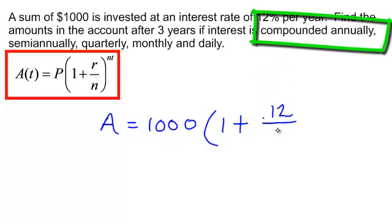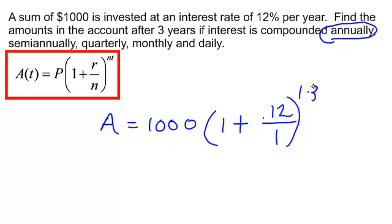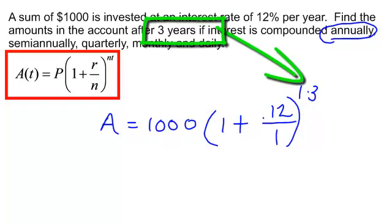Well, my first problem is to find out how much money I will have in my account if I compounded it annually. So how many times per year is annually? Just one. And we will raise that to the 1 times. This said calculate this for three years, it will be 1 times 3.